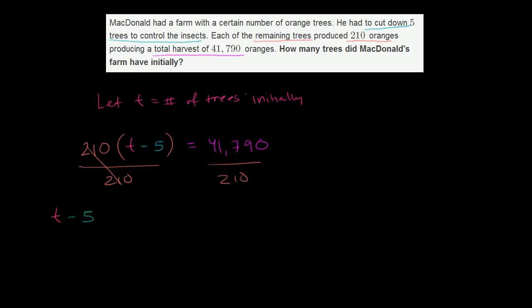The left-hand side simplifies to t minus five. The right-hand side, let's see, do some long division here. So 41,790 divided by 210. 210 does not go into 4, does not go into 41. It goes into 417 one time, because two times would be 420. One time, 1 times 210 is 210. You subtract, you get 207, and then you bring down the 9.